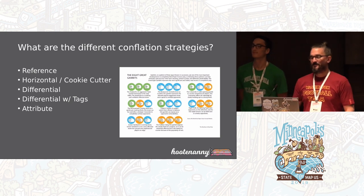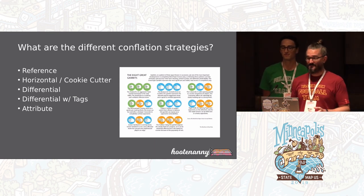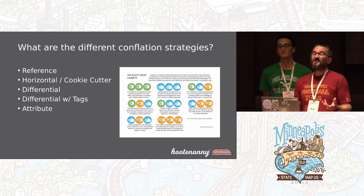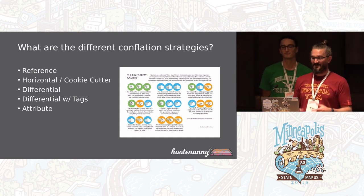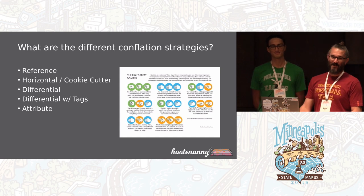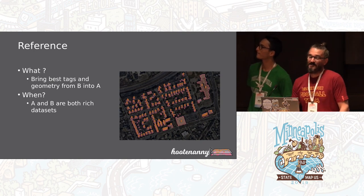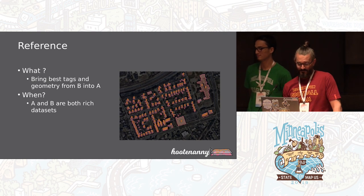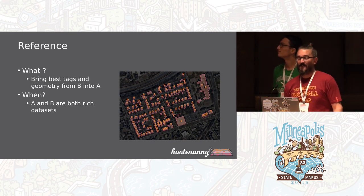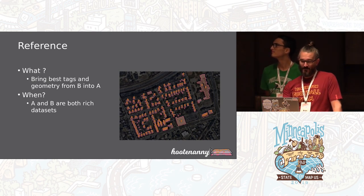Hootenanny has different conflation strategies — canned groups of the hoot conflate command options labeled to reproduce desired conflation behavior. You need to know your data before you attempt to conflate it, and then you use these strategies accordingly. Reference conflation is the most commonly used and what I'd call the truest form of conflation: when you have two rich data sets and want to merge them to get the best geometry and the most complete tagging those combined data sets can provide.